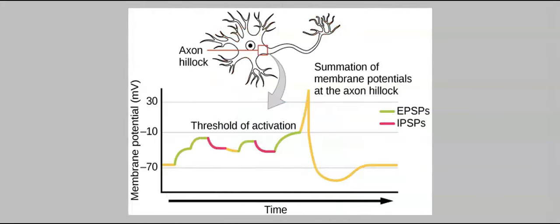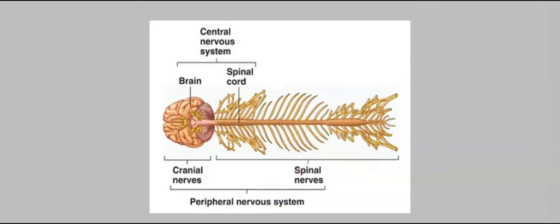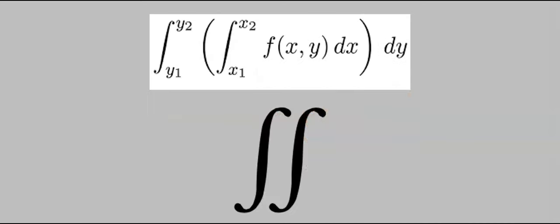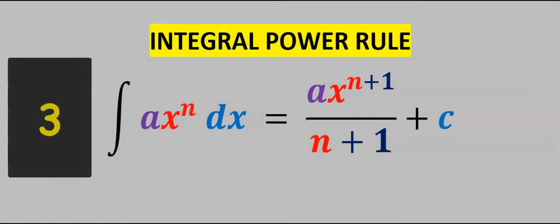In biology, the sum of neuron signals with respect to time can determine the membrane potentials of the system components of the brain, spinal cord, nerves, and sensory receptors. Double integration can be used when you need to integrate the results of an integrand.